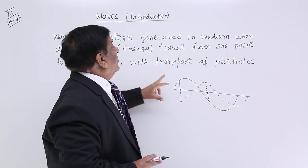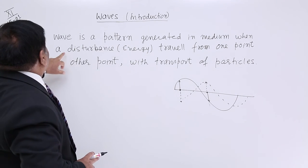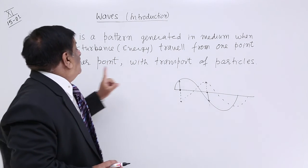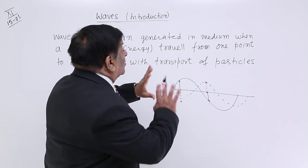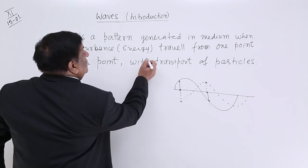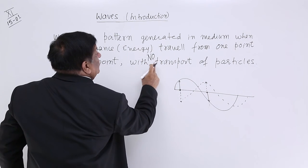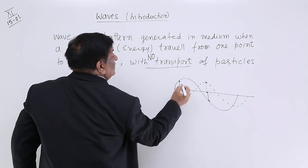So now we can write it: A wave is a pattern generated in the medium when a disturbance carrying energy travels from one point to another point, with no transport of particles.